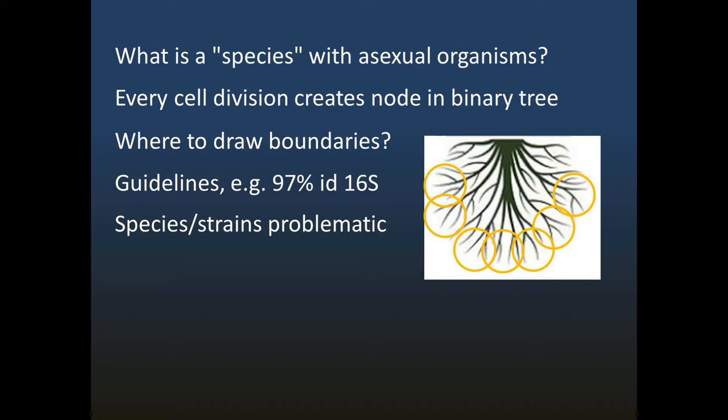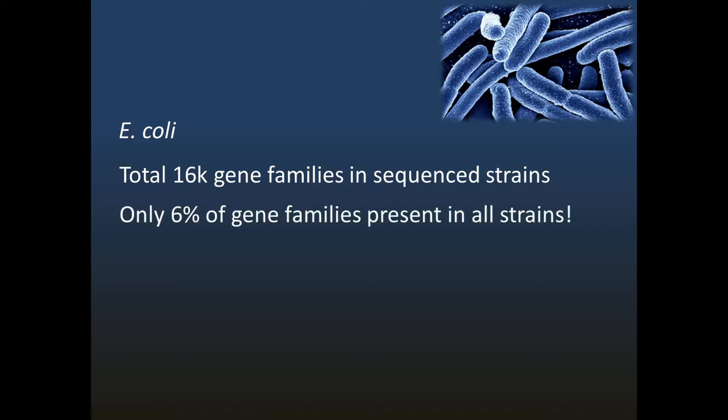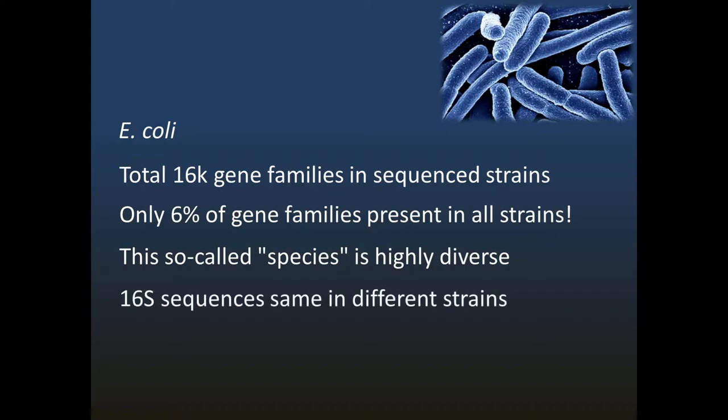Keep in mind that the 16S gene is only a tiny fraction of the genome, and two cells with similar or identical 16S sequences may have large differences in other genes. We can illustrate the problems with defining species and strains by considering the well-known bacterium E. coli. 16,000 gene families have been identified across all sequenced strains, but only 6% of these are present in all strains, and a typical pair of strains shares only around 60% of its genes. Therefore, this so-called species has high genetic diversity, which is reflected in functional differences between strains. For example, whether they're pathogenic or benign. And in most cases, strains cannot be distinguished by their 16S sequence.